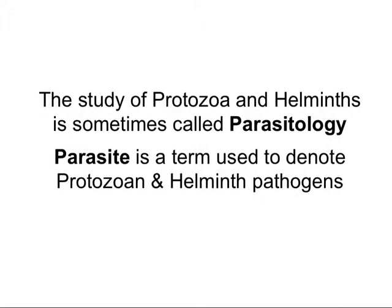We've just looked at a whole series of protozoans, as well as four distinct groups concerned with human infection. We're about to look at the helminths, or the worms. When we consider the study of protozoa and helminths, it's sometimes called parasitology. A parasite is a term used to denote protozoan and helminth pathogens. Let's take a look at a couple of protozoan pathogens before we move on to the helminths.